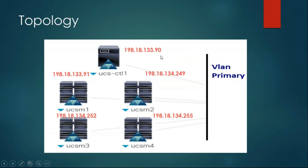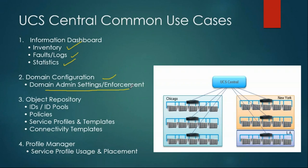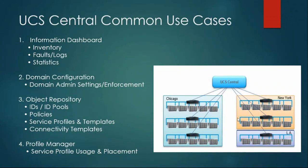This is the topology I'll use in our simulated environment: one UCS Central managing all my UCS Managers spread across different geographical locations. With UCS Central you can have an informational dashboard showing inventory, faults, logs, and stats. You can also do domain configuration, create objects, ID pools, policies, service profiles, connectivity templates — everything from UCS Manager, but at a larger scale with UCS Central. You can also see the profile manager for service profile usage and placement.